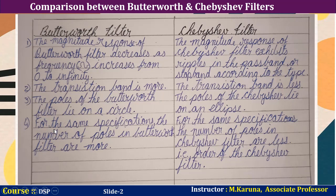For the same specifications, the number of poles in the Butterworth filter are more. In the case of the Chebyshev filter, for the same specifications the number of poles are less — that is, the order of the Chebyshev filter is lower.